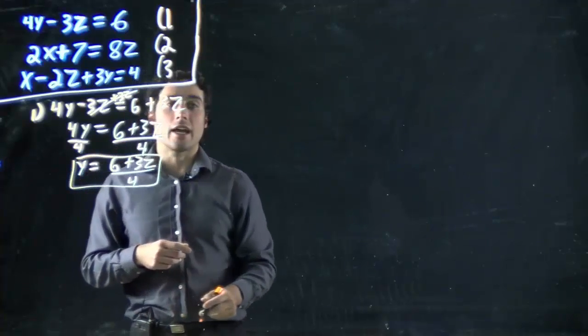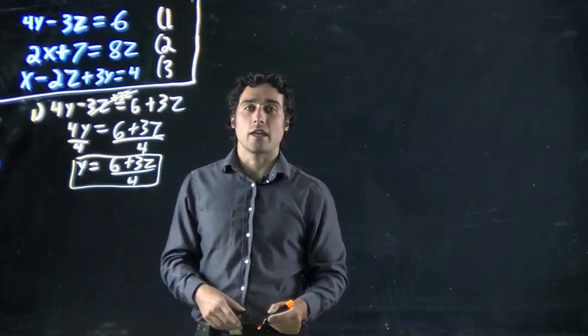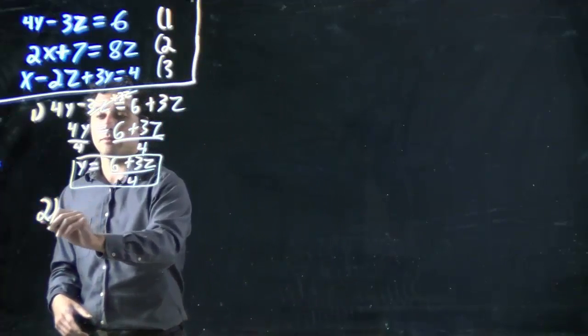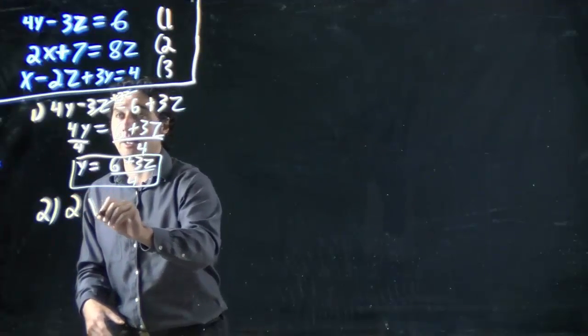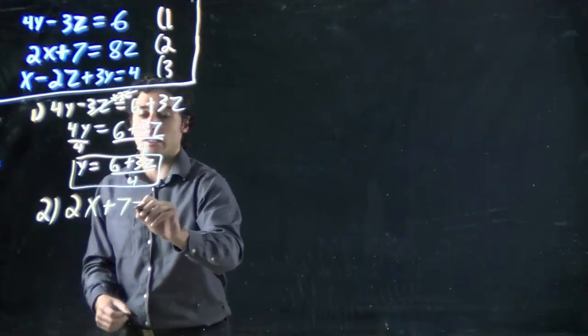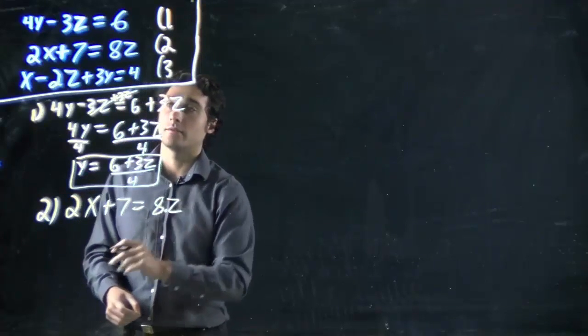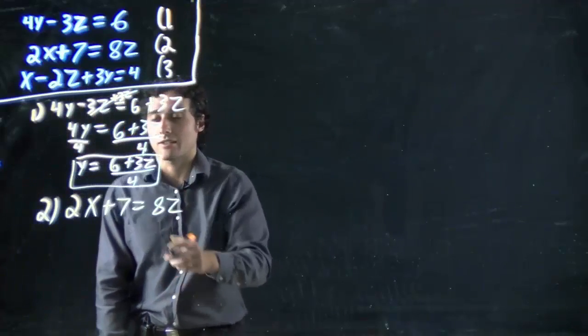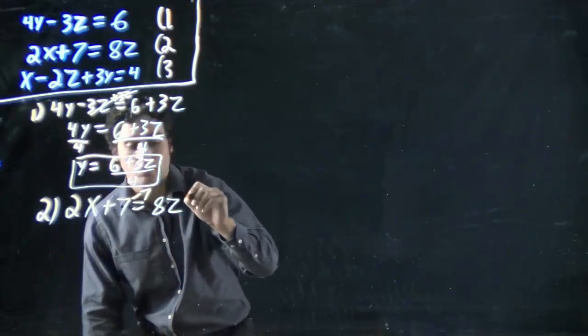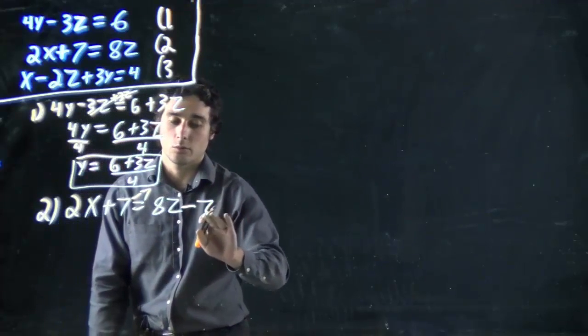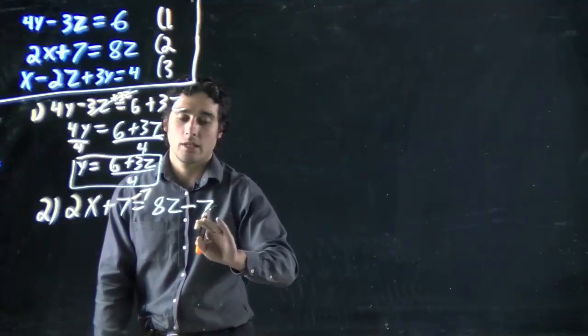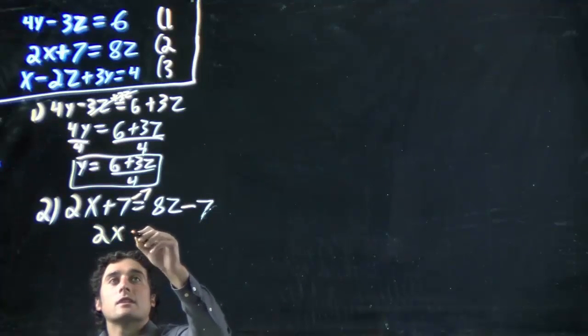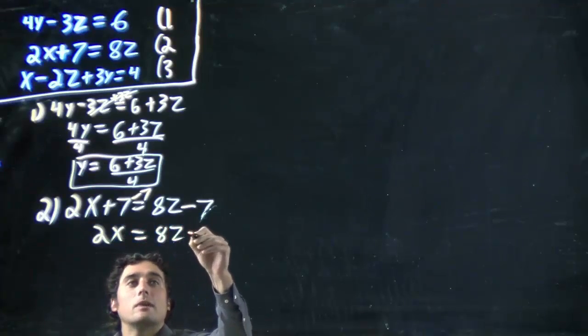I want to do the same thing with x and use equation 2 for that. Equation 2: 2x plus 7 equals 8z. You want to get x on its own? It's kind of similar to the one we just did. In this case, I'm subtracting 7 from both sides, not z. Bad instinct there.